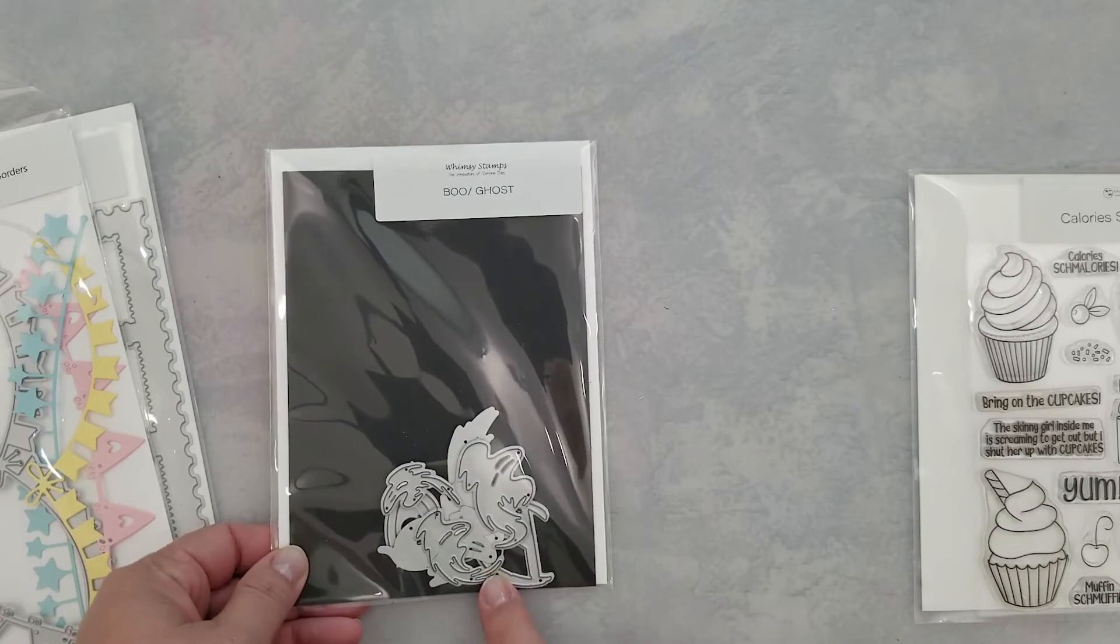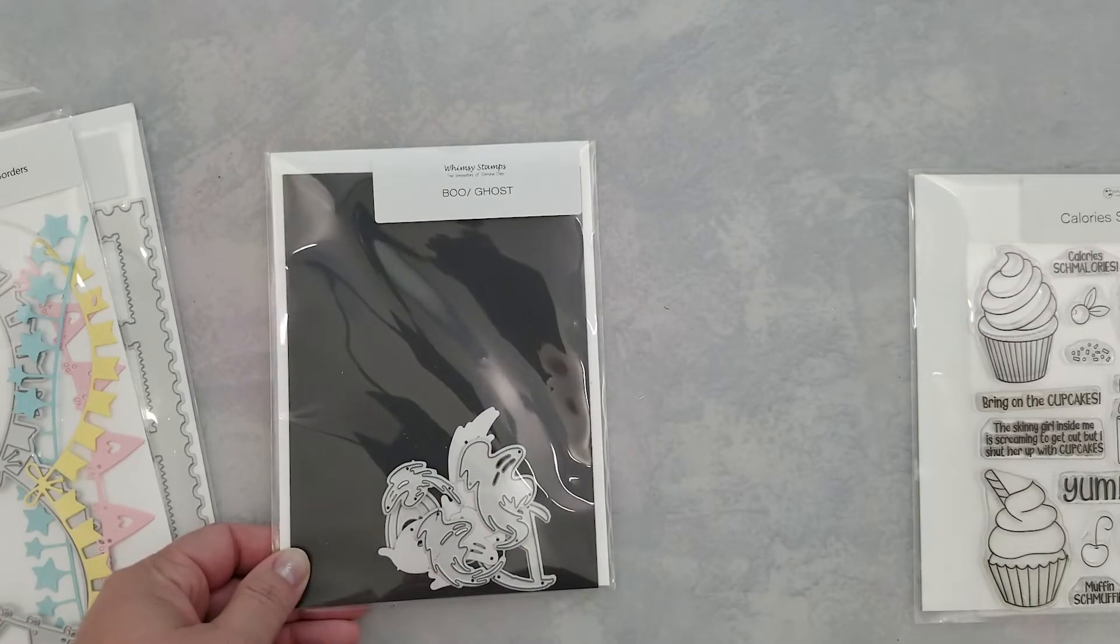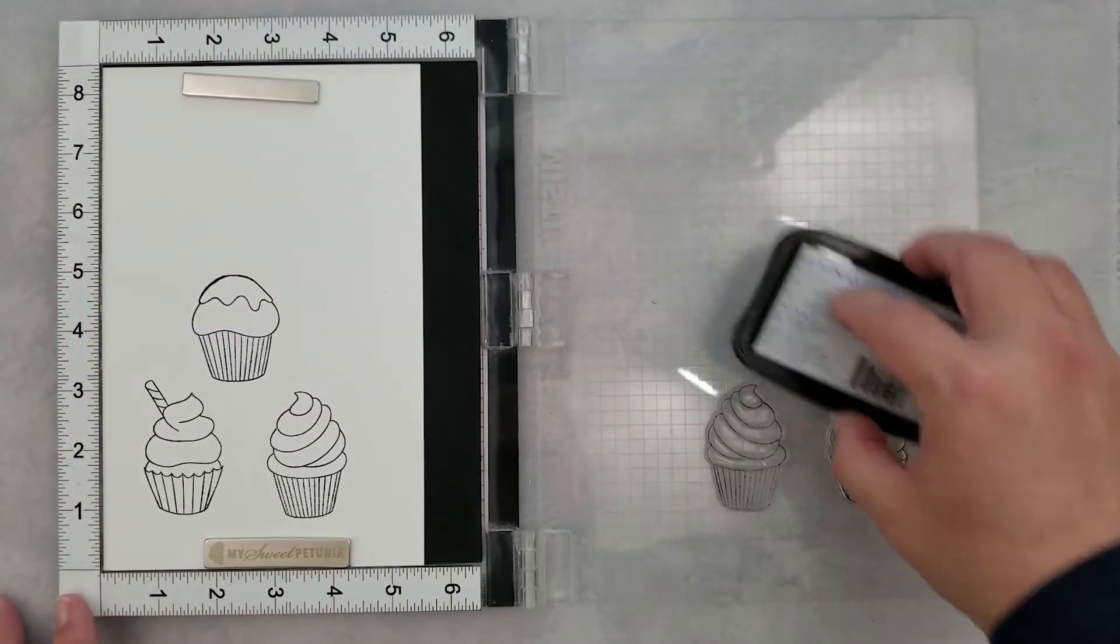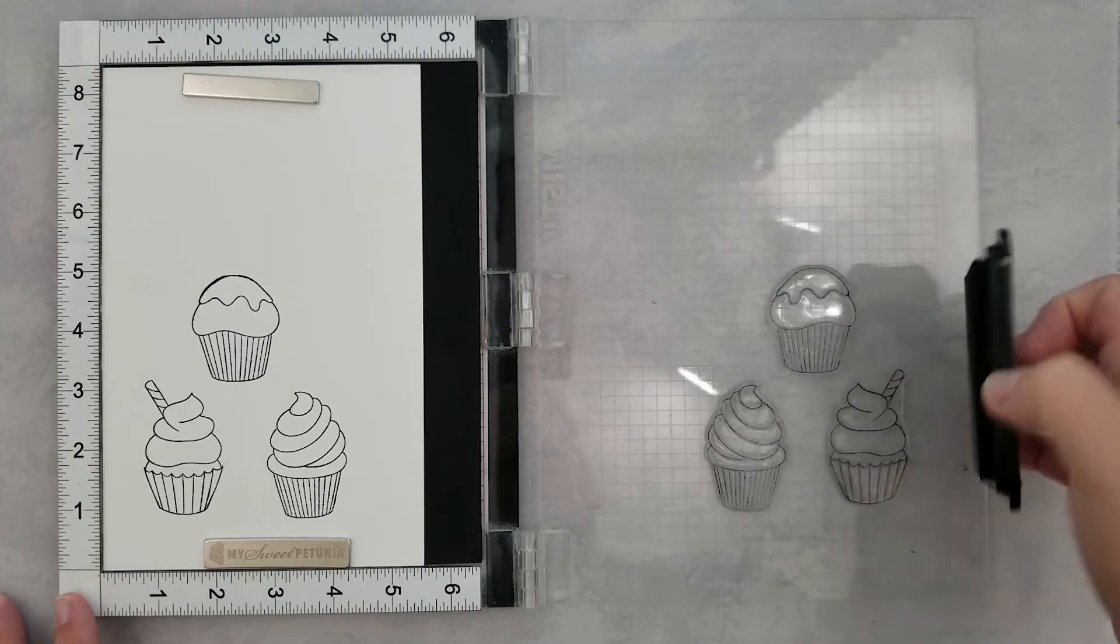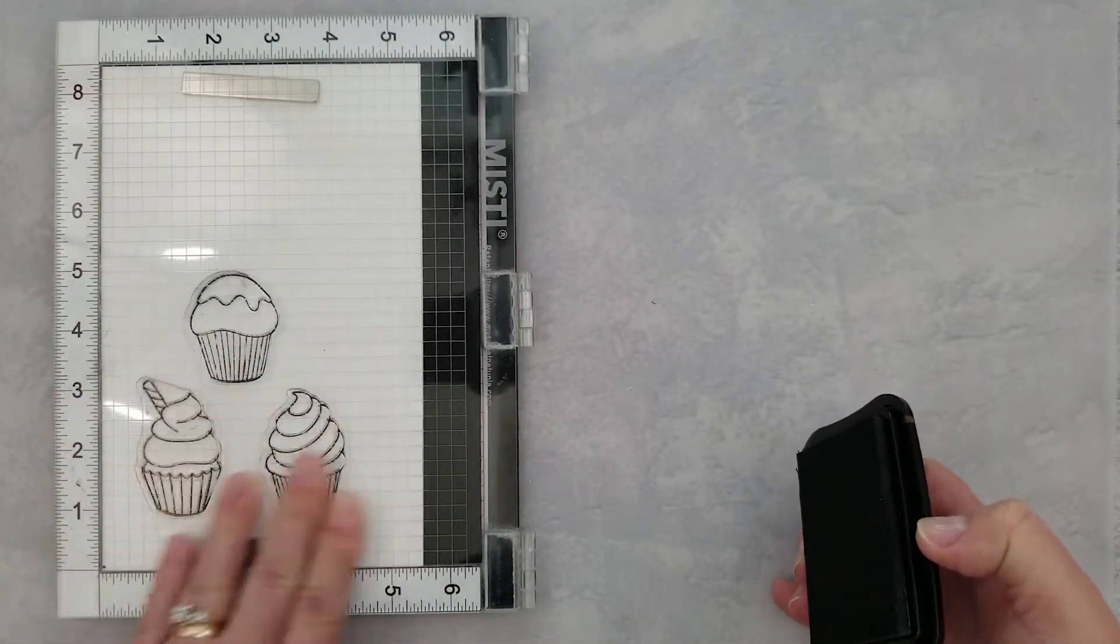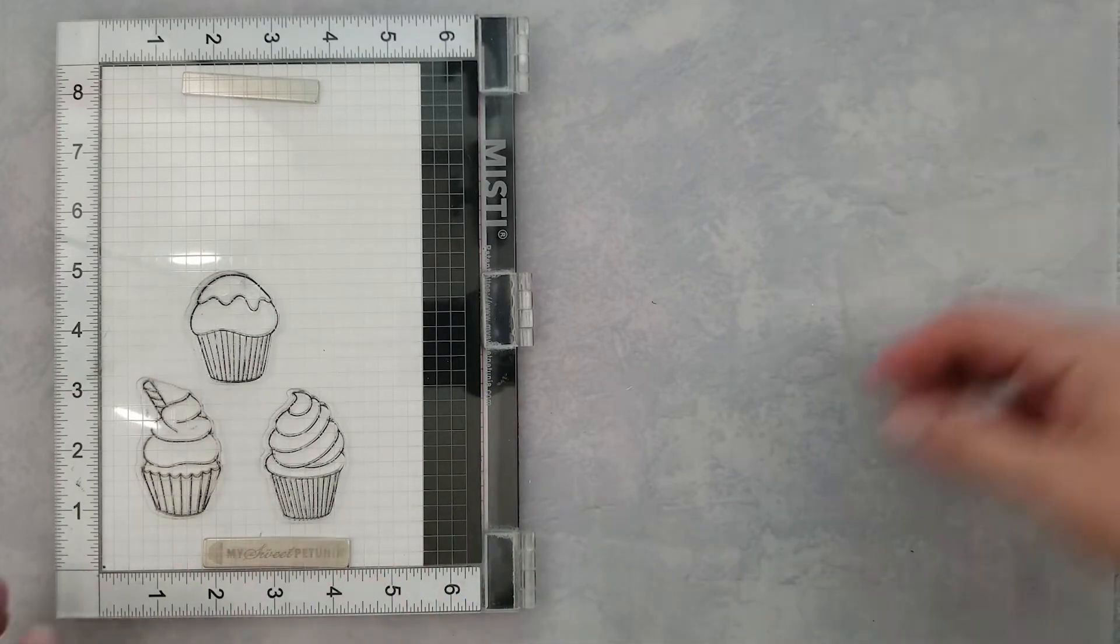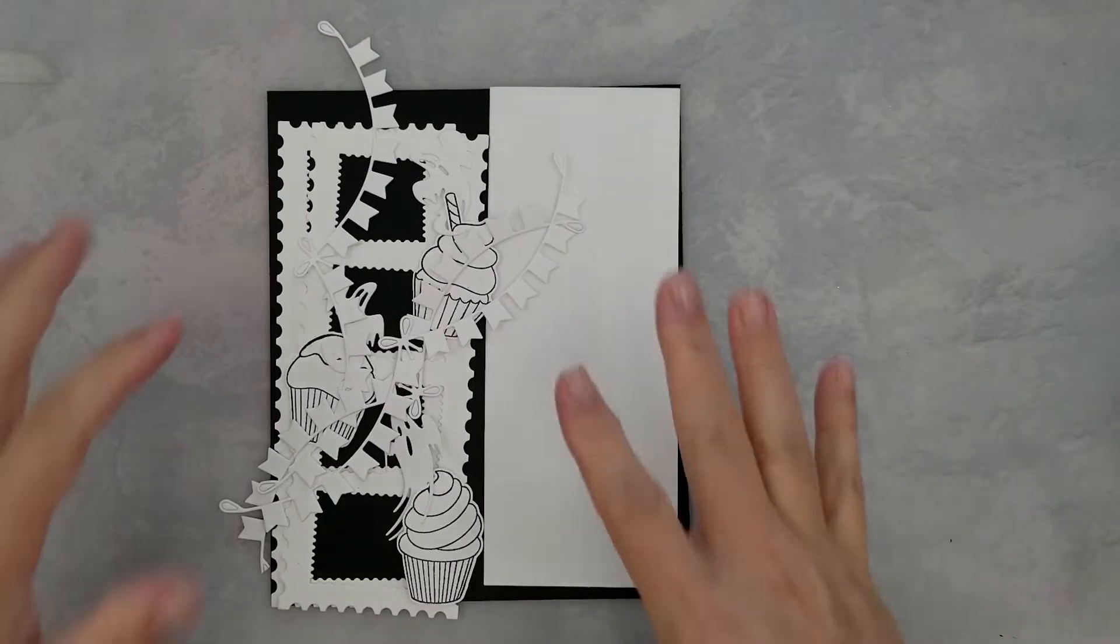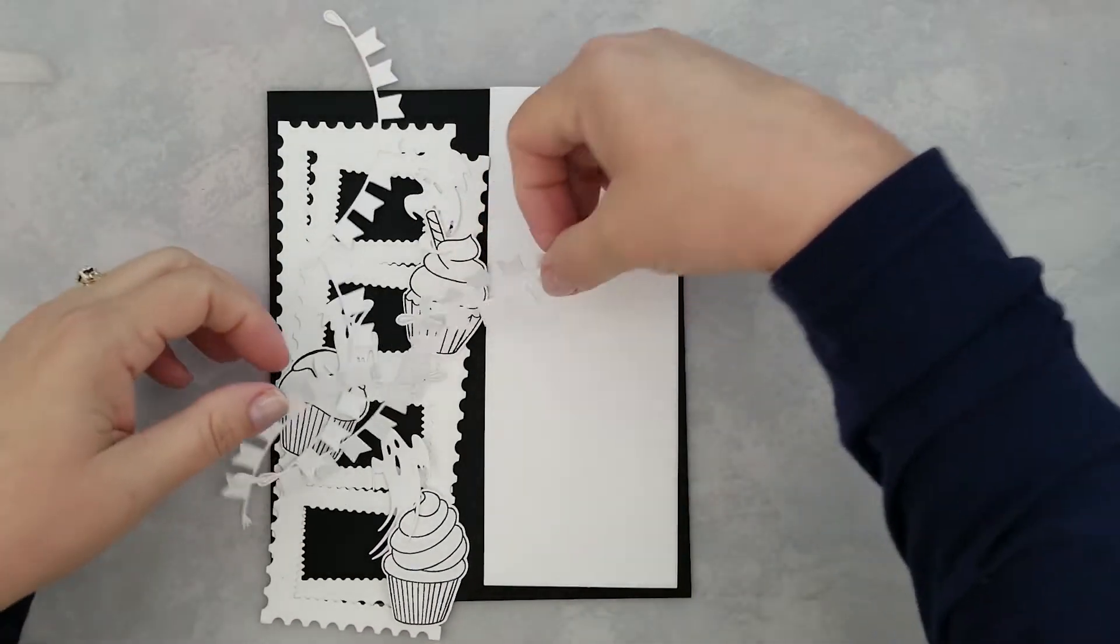I'm stamping three of the images onto 80-pound smooth cardstock using Memento Tuxedo Black ink so we can do a little bit of Copic coloring. I've done a little bit of prep work to speed things along. I have a black card base I'm going to be using.